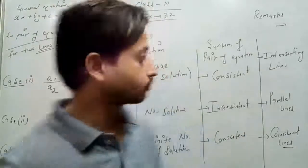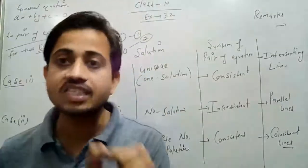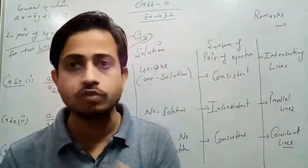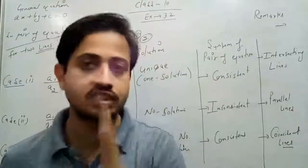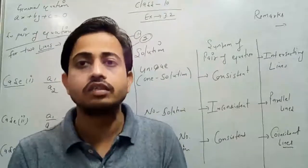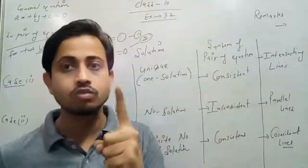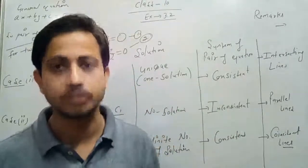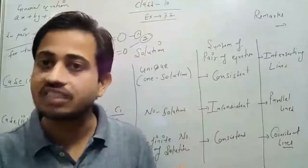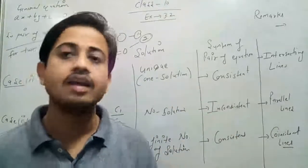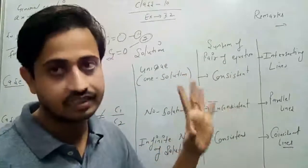Now we have to find the nature of the system. If you get the solution, the system is consistent. If you do not get the solution, the system is inconsistent. In this case we get one solution, so the system of equations is consistent.